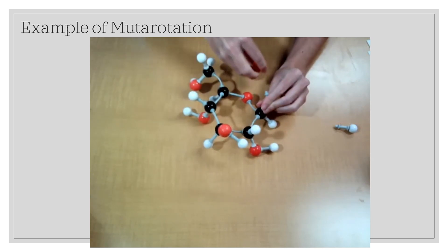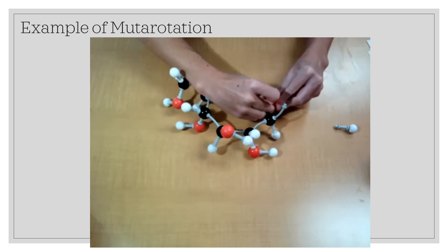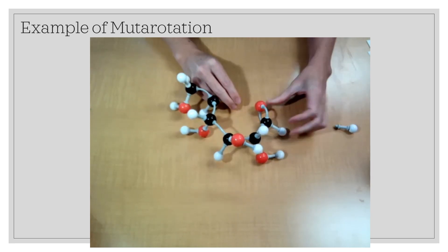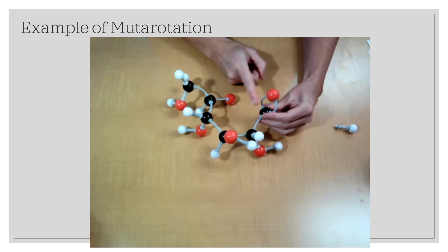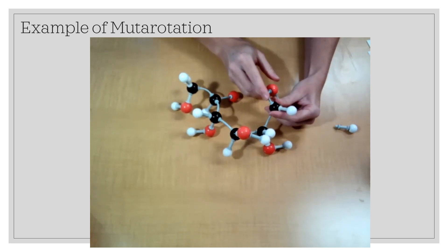So let's reset that really quick. So in order to get the beta form, which we just showed, we broke this bond. Let's go ahead and have the attack happen on the other side.